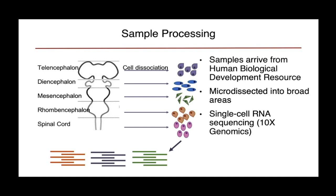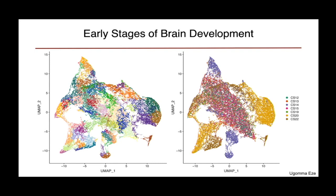At the earlier stages, there are interesting questions about the diversity of populations that have not been molecularly characterized before because of the difficulty of accessing these samples at a single-cell level. We receive our samples from the Human Biological Developmental Resource in the United Kingdom and microdissect these samples into broad areas. From this, we have performed 10X Genomics single-cell RNA sequencing. If we look at just the cortex from these samples, we see a number of clusters and impressive molecular heterogeneity even at these early stages. We also see interesting segregation of the earliest time points, Carnegie stages, up through Carnegie stage 15 in the middle of this plot.